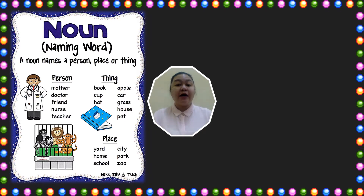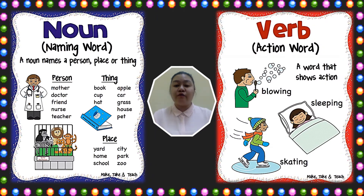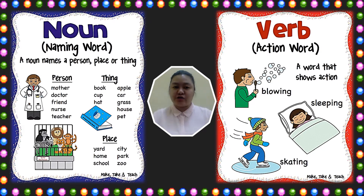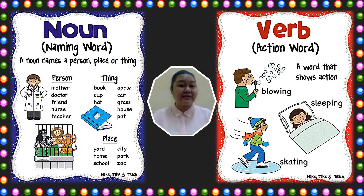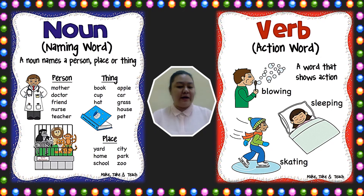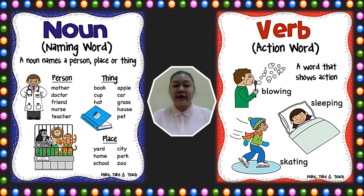And if we say verb, verb is an action word — a word that shows action. So if you look at the pictures here, they are doing some actions. For example, blowing, slipping, or skating.